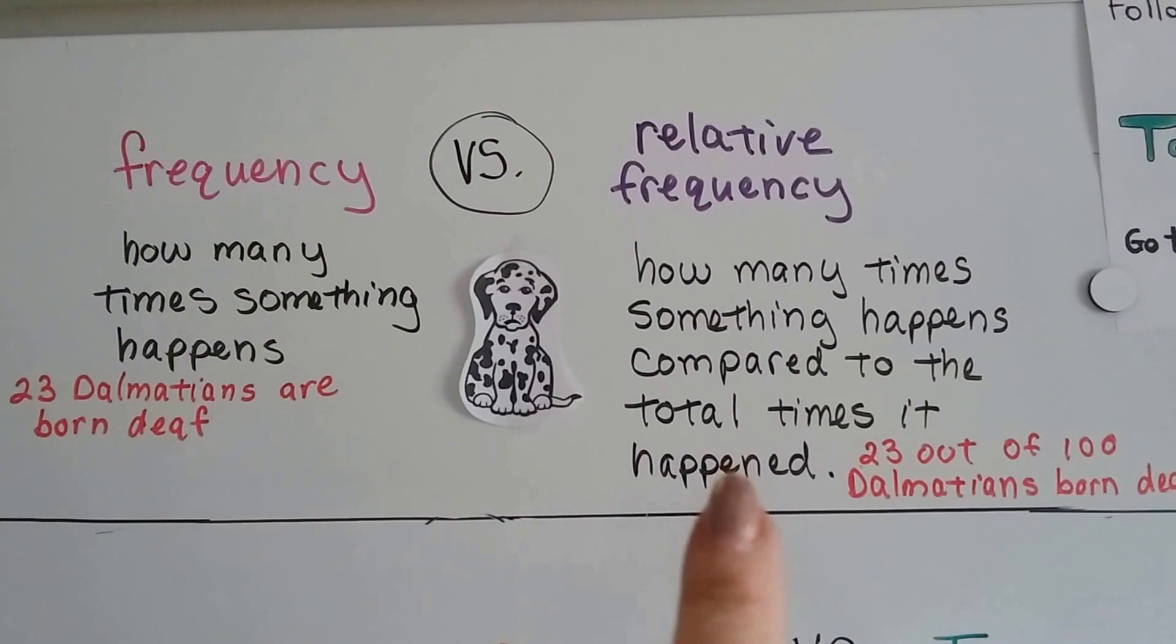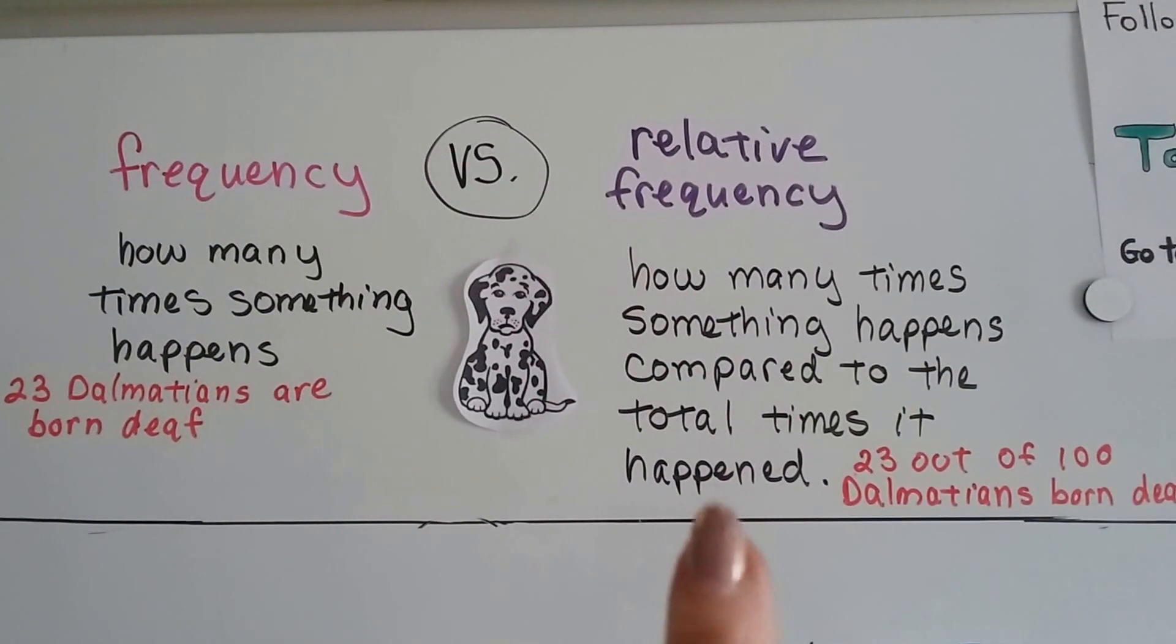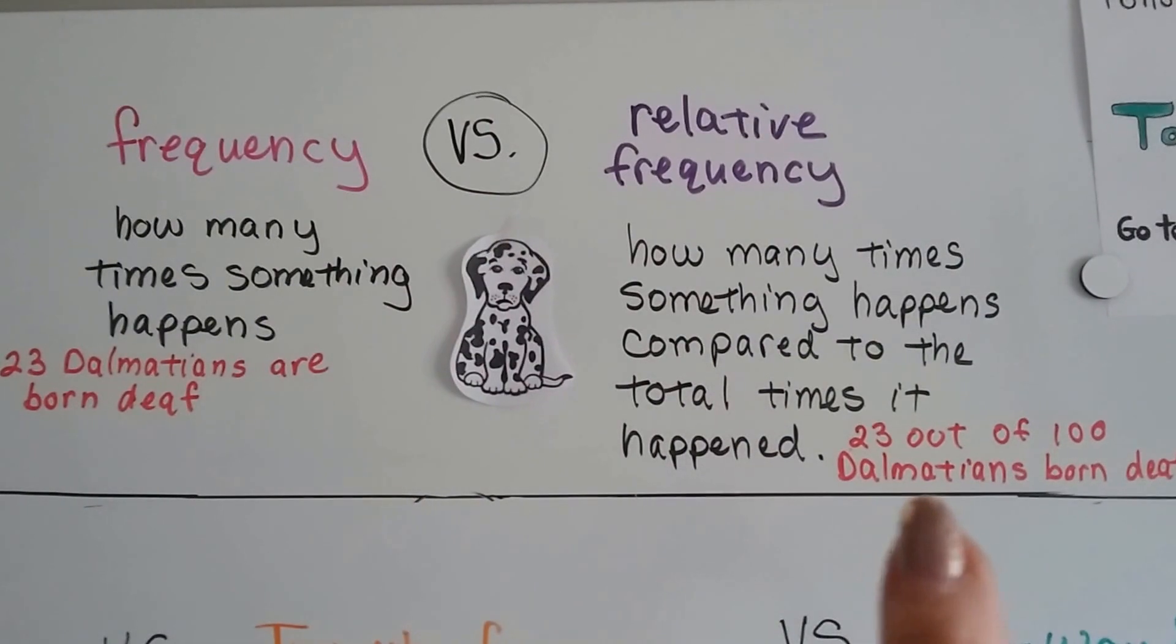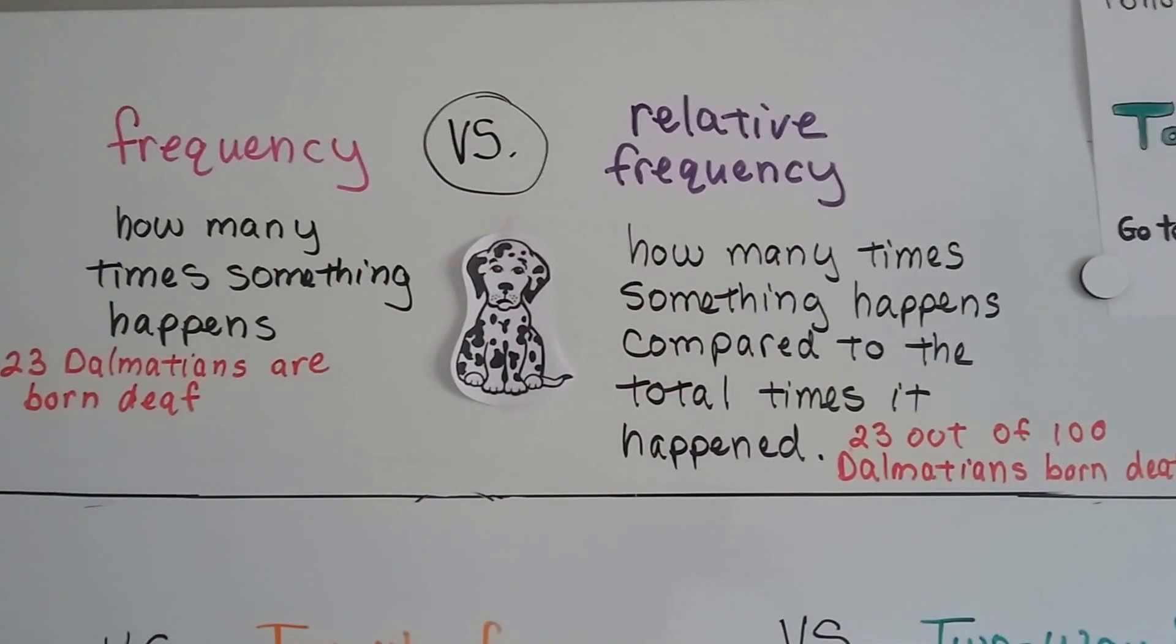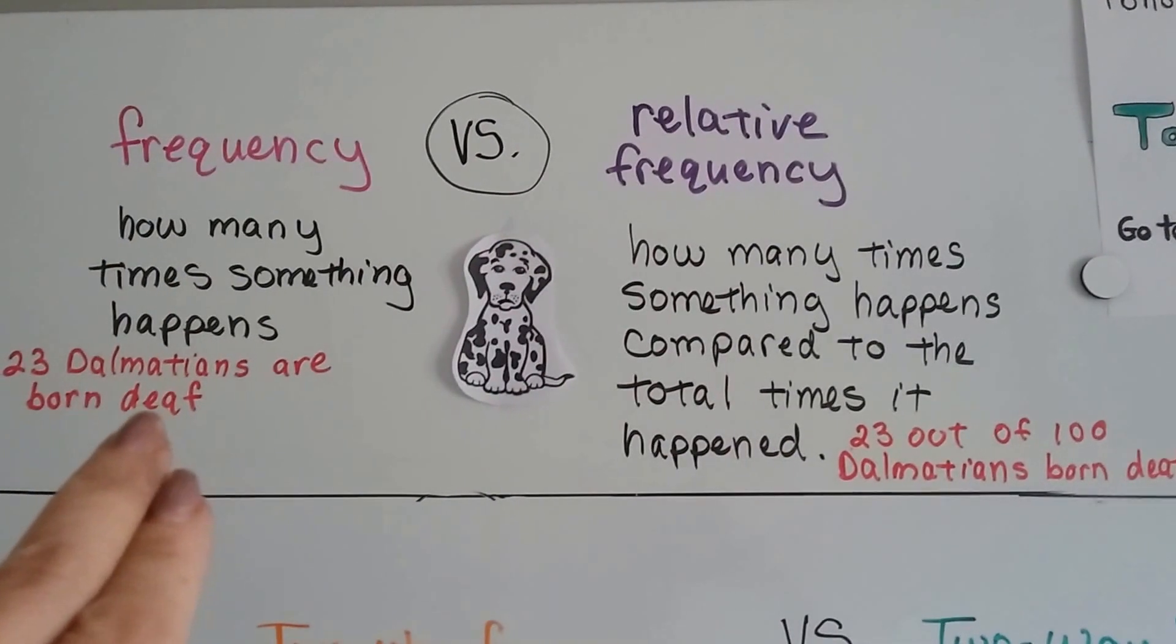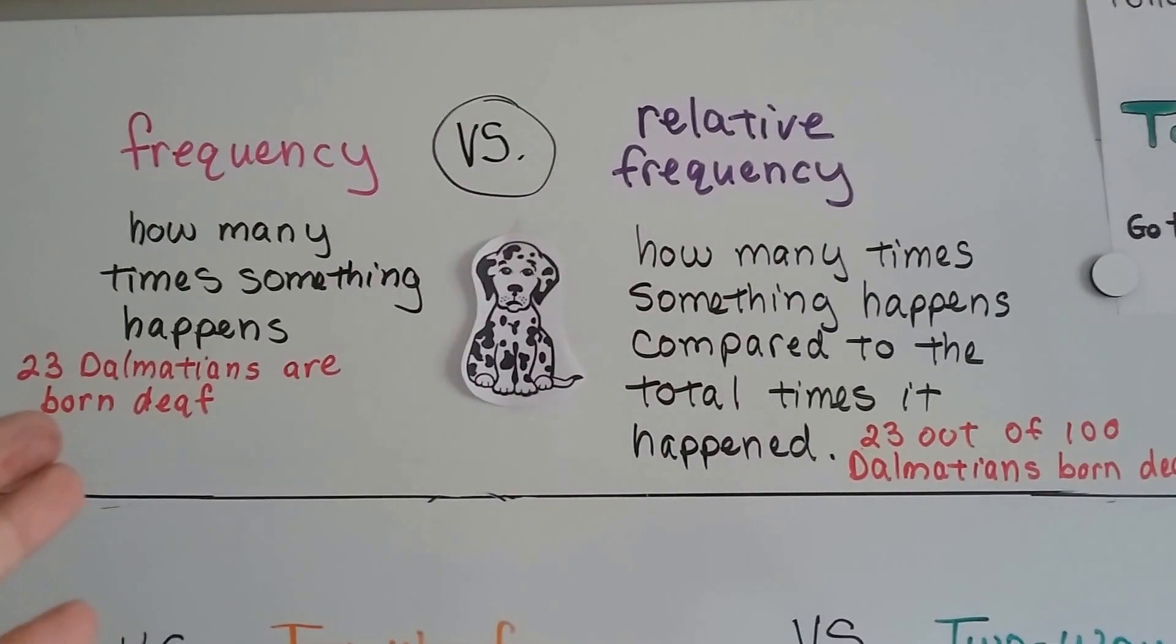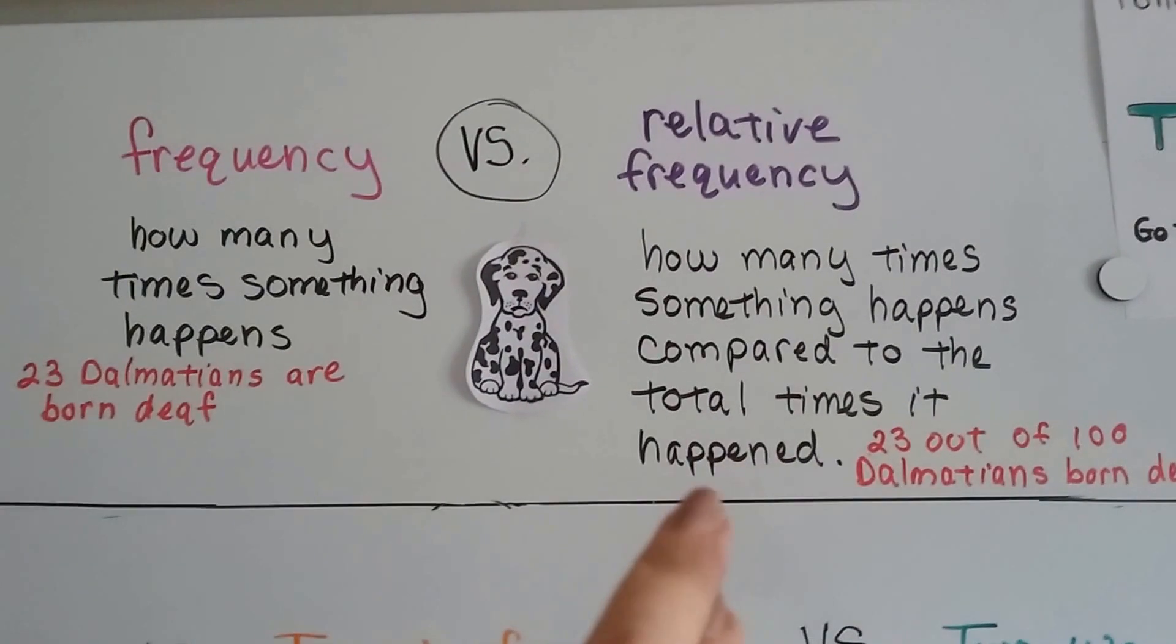And the relative frequency would be how many times something happens compared to the total times it happened. So that would be 23 out of 100 Dalmatians are born deaf. Just knowing the frequency, you could say, is it 23 out of 23 or all 23 deaf?